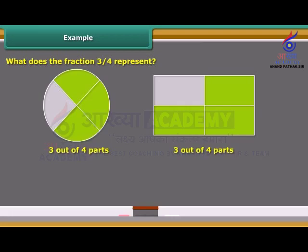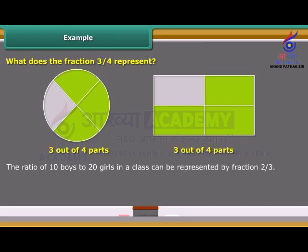The ratio of 10 boys to 20 girls in a class can be represented by fraction 2 upon 3. In the fraction 2 upon 3, number 2 is called the numerator of the fraction, and number 3 is called the denominator of the fraction.